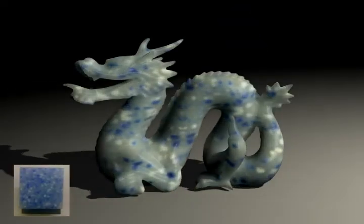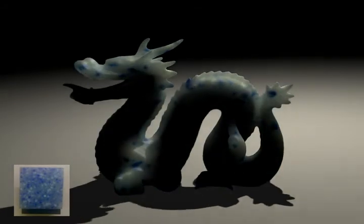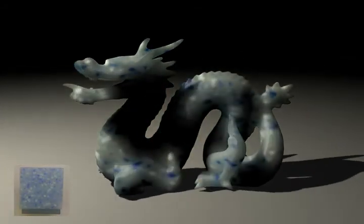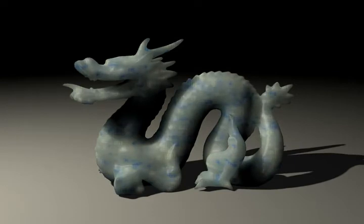In this example, the dragon is rendered with stone material. With SubEdit, the heterogeneity of the measured stone material is easily enhanced or reduced and generates convincing subsurface scattering effects.